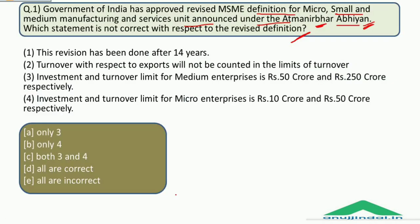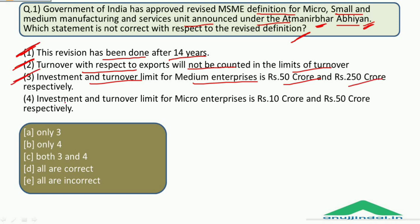Now let's identify the incorrect statement. Statement 1 — this revision has been done after 14 years: correct. Turnover with respect to exports will not be counted in turnover limits: correct. Investment and turnover limit for medium enterprises is Rs. 50 crores and Rs. 250 crores: correct. Investment and turnover limit for micro enterprise is not Rs. 10 crore — this is incorrect. So the correct answer is option B, only statement 4.